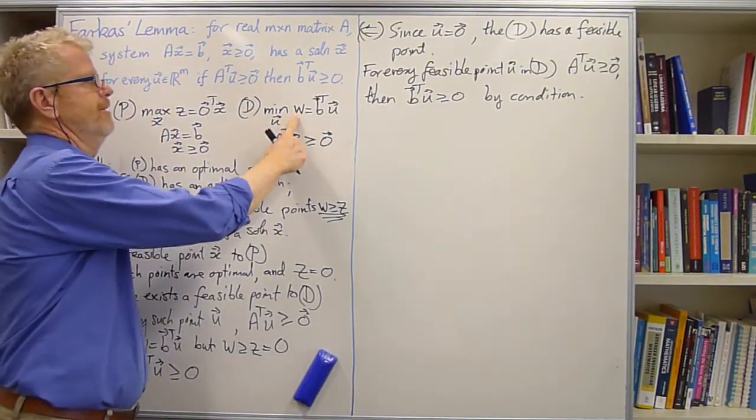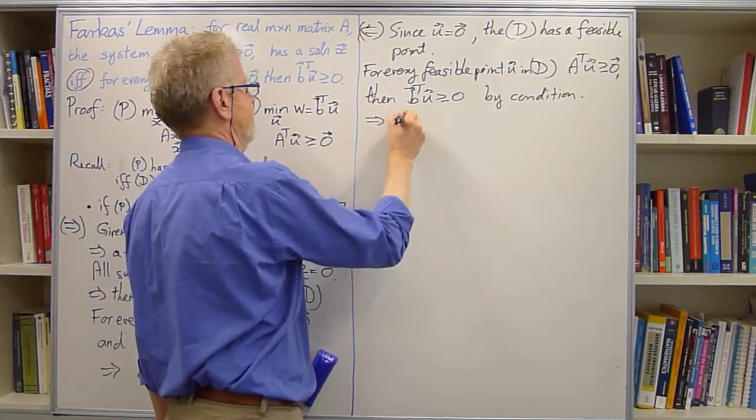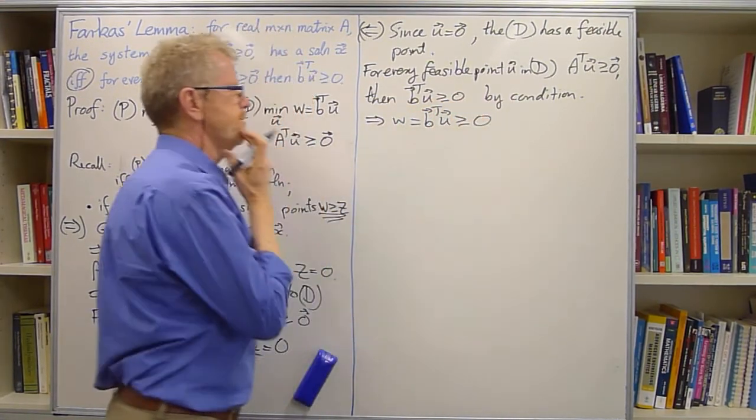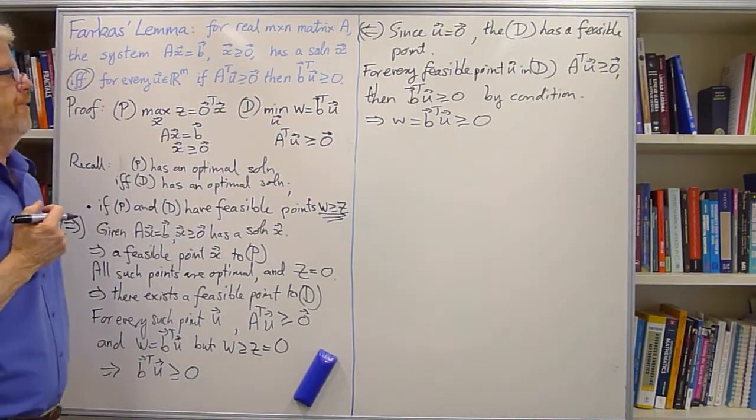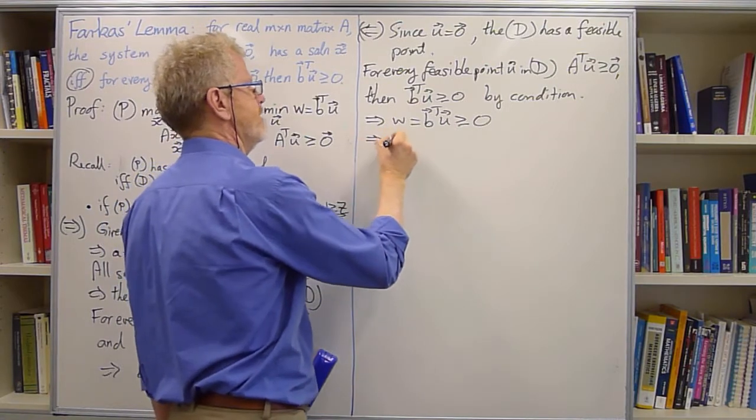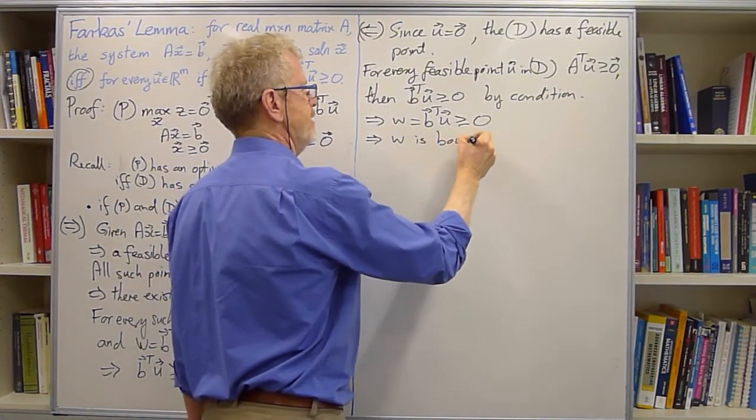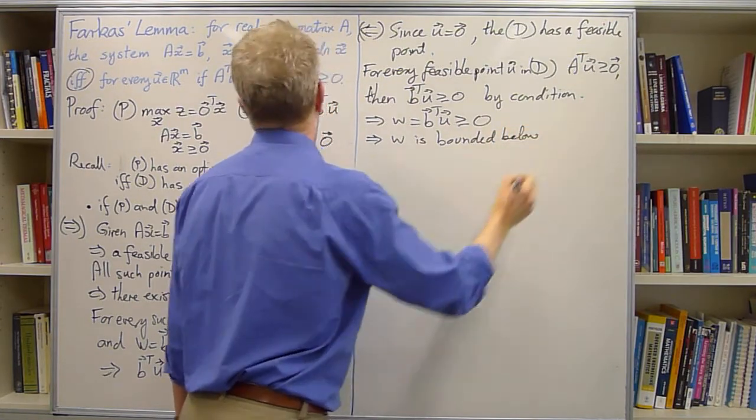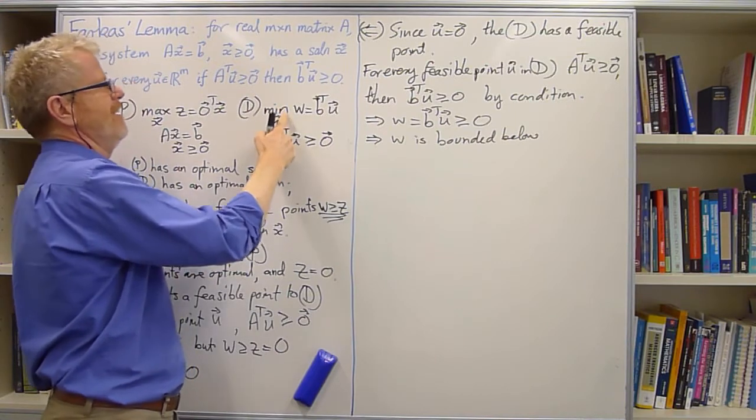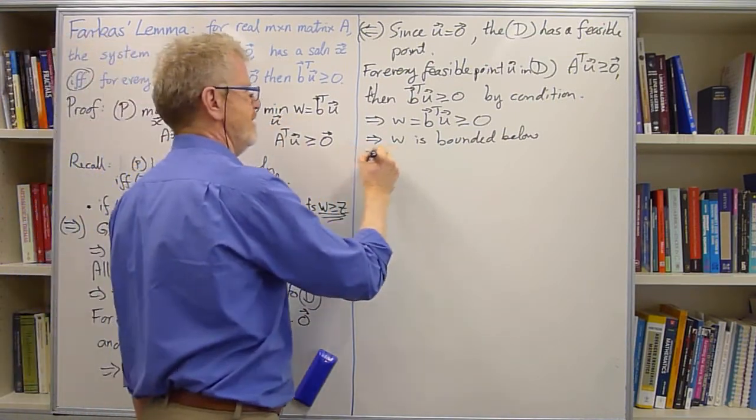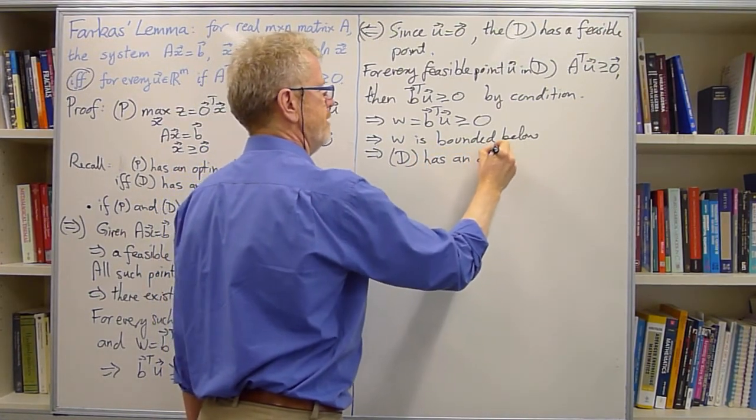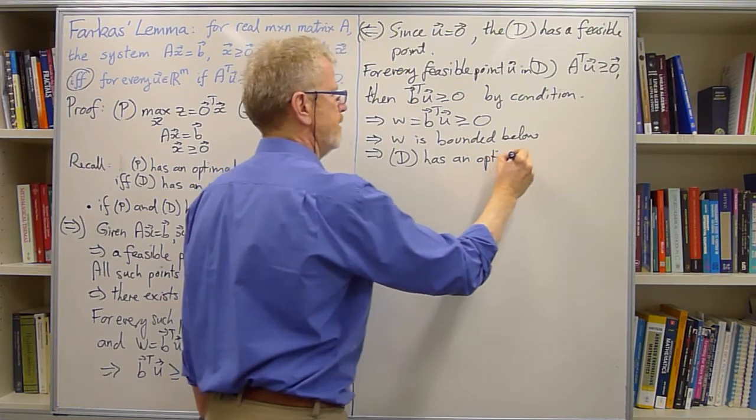So what does that mean? Well, it means that W, which is B transpose U, is bigger than or equal to 0 for all feasible points U. So that says W is bounded below. And we're doing a minimization problem. So, and since it's bounded below, that says that the dual has an optimum solution.